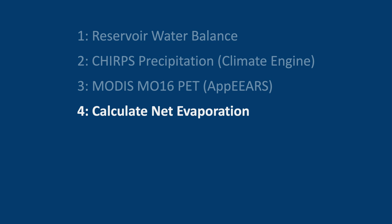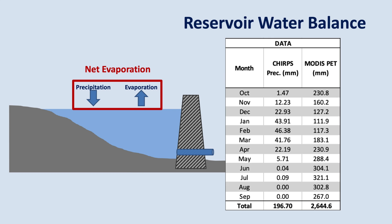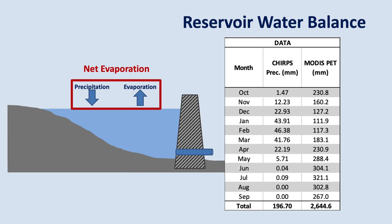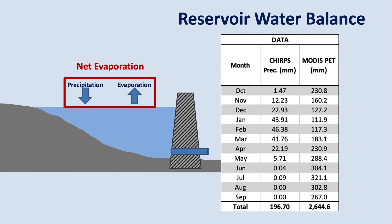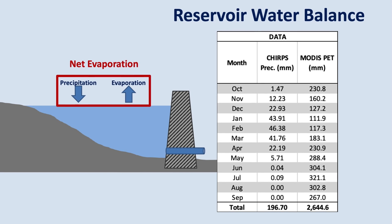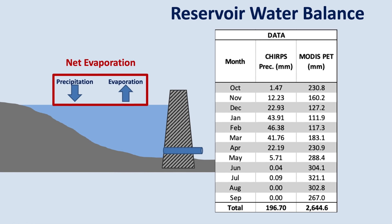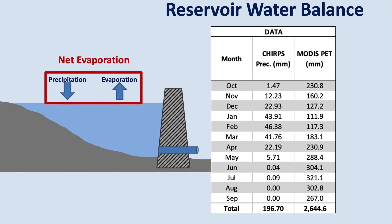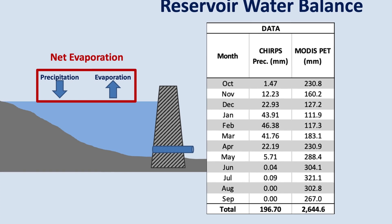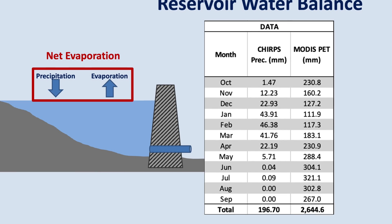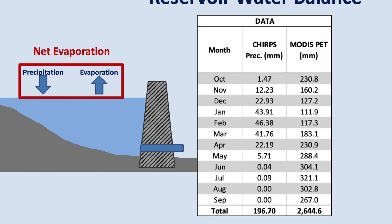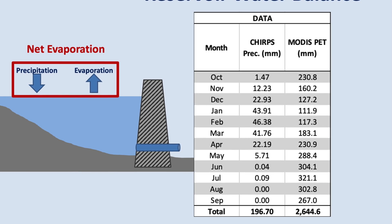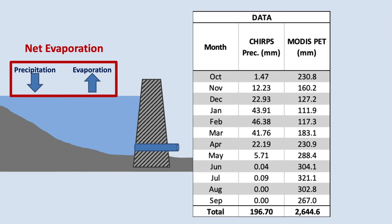The next step is to calculate the net evaporation rates. Here are the average monthly precipitation and potential evaporation rates for the Kajaki reservoir area based on satellite data from the past 22 years. The annual precipitation is around 200 mm, while potential evapotranspiration is over 2.5 m, which is quite typical of hot, arid regions.